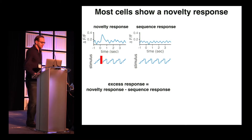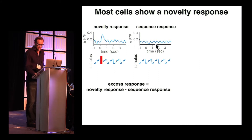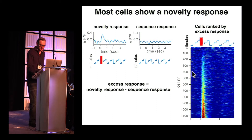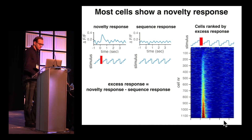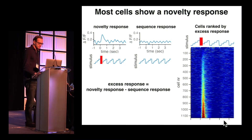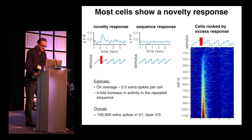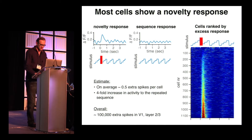To quantify this effect in the population, we calculated the excess response, which is the novel response minus the sequence response. On the right side, we see the 1,100 cells recorded from five mice, ranked by excess response. Most cells have a detectable excess response. We estimate on average about 0.5 extra spikes per cell — which might sound modest, but it's a fourfold increase in activity relative to the repeated sequence. Overall, that gives an extra 100,000 spikes in V1 layer 2/3 alone.